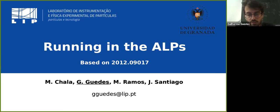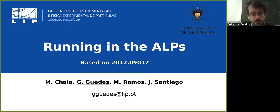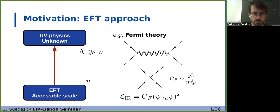I'm going to start with a brief theoretical introduction on the concept of effective field theory and their renormalization group equations, and the importance of using them to correctly interpret the experimental bounds we obtain on these particles. Then I'll go into more detail on the calculation of these renormalization group equations. And at the end, I'll show how using this running of couplings can give us much stronger bounds than when we use only the direct bounds.